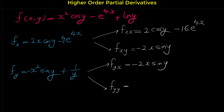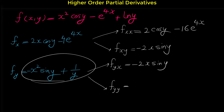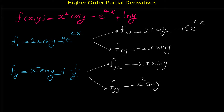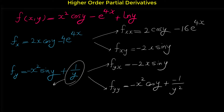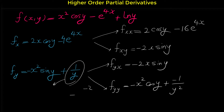Now let's find f sub yy, the derivative of f sub y again with respect to y, which is negative x squared cosine y plus the derivative of 1 over y, which is negative 1 over y squared. To find the derivative of 1 over y, you can write it as y to the negative 1 and use the power rule to get negative y to the negative 2, which is the same as negative 1 over y squared. So these are all the second partial derivatives of this function.